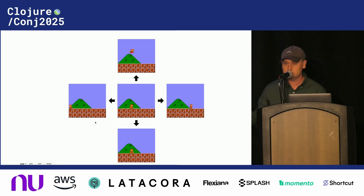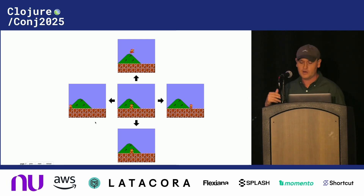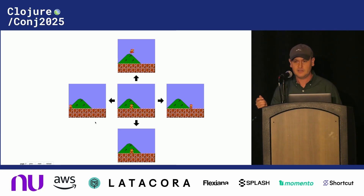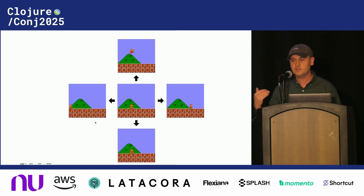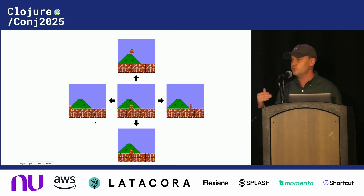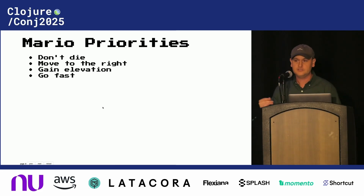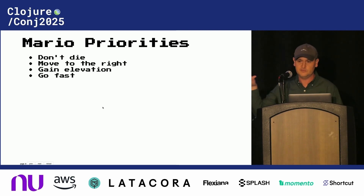We learned about A-Star Search and about emulation — now we need to connect the two problems. Our nodes are going to be emulator states, and our edges are going to be button presses. We have an emulator state, we press buttons, and we get more emulator states — more nodes. From those nodes, we can press more buttons, get more nodes. One of the interesting things about our problem is that we'll be generating the graph as we're searching. We want to search towards our goal node, which is defeating Bowser.